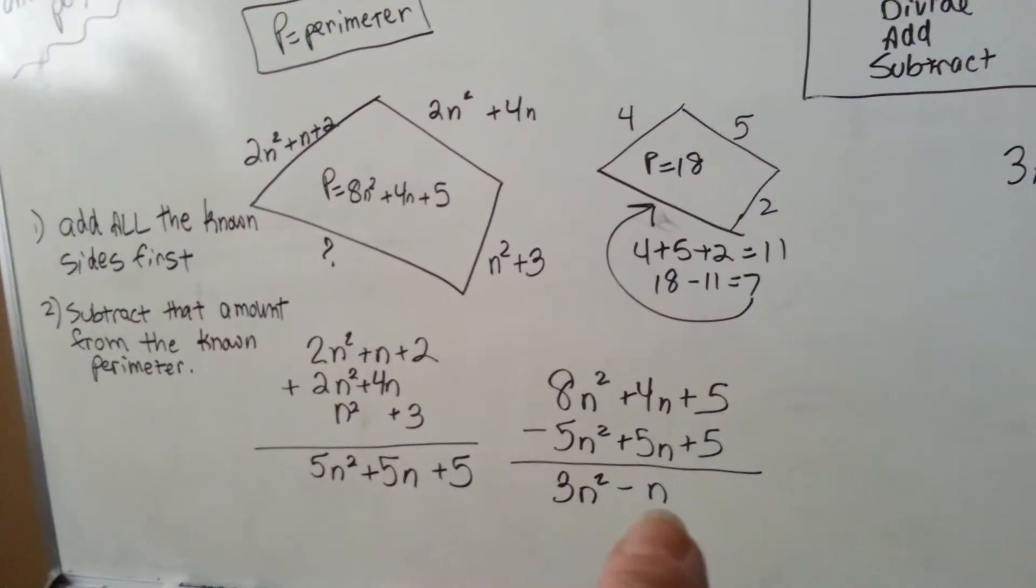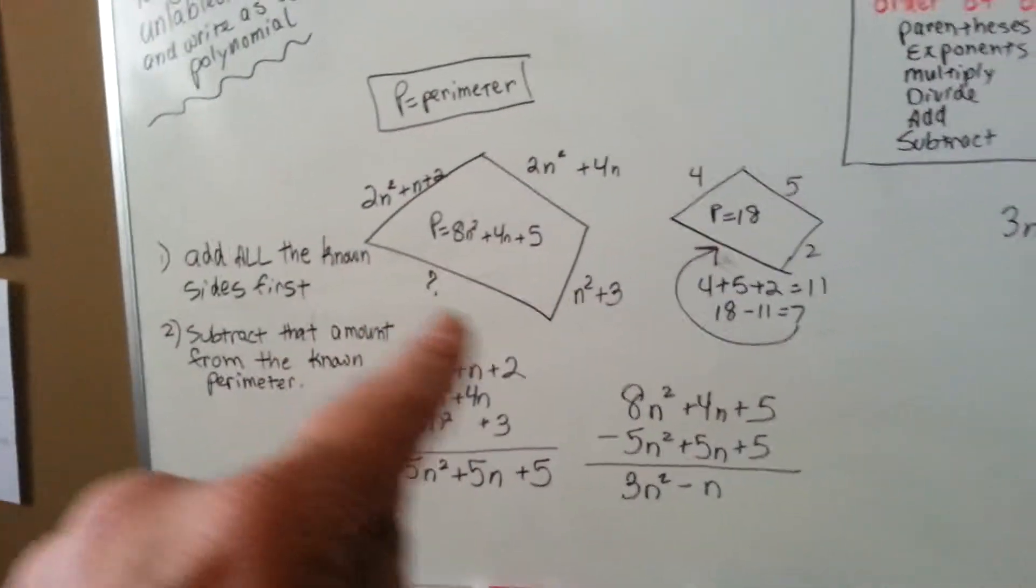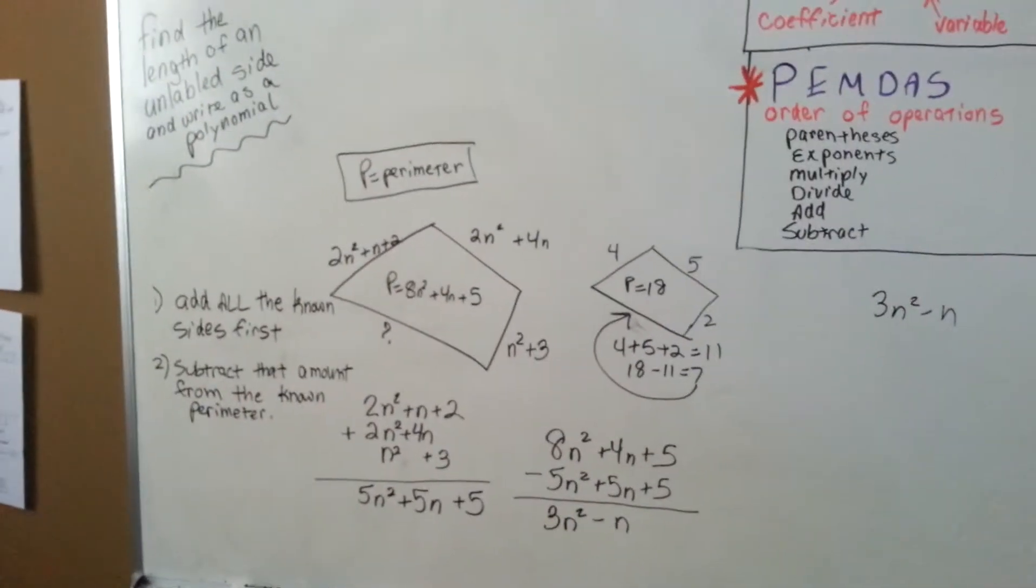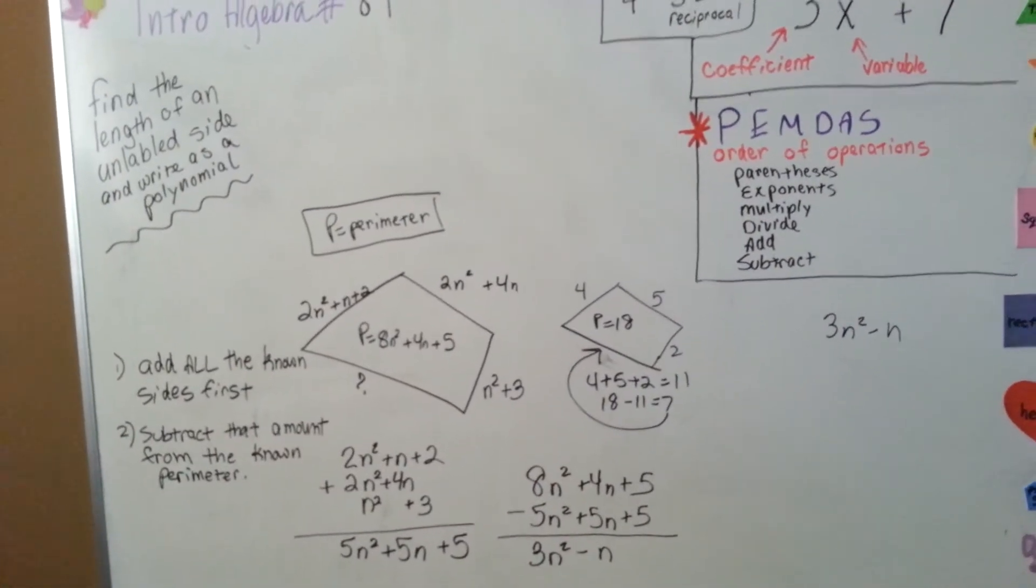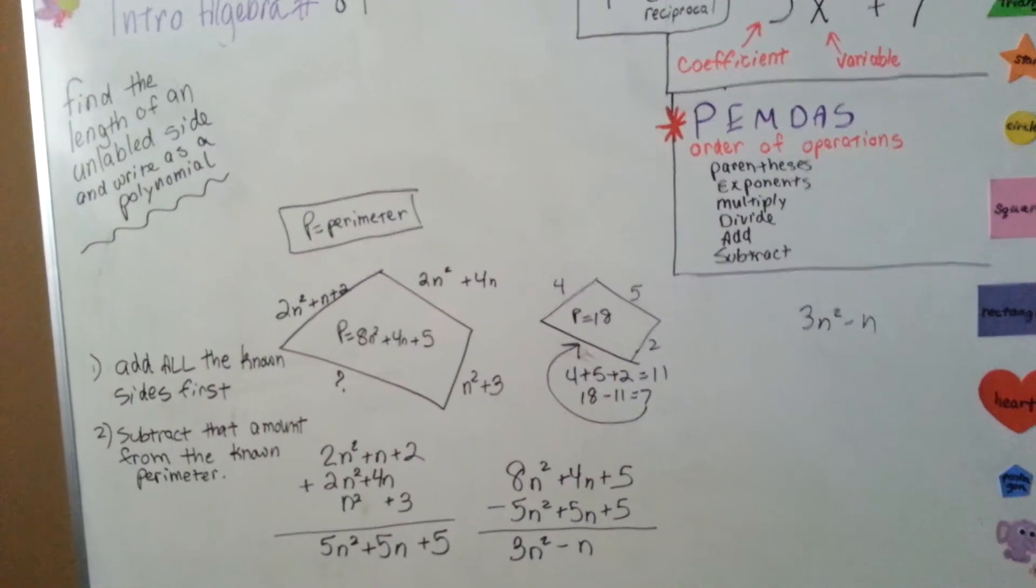So our answer is 3n squared minus n. That is how long that side is, and that is how you find the length of an unlabeled side and write it as a polynomial.